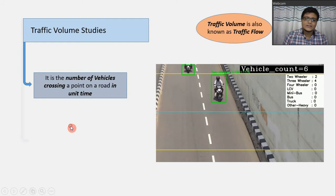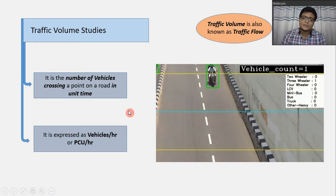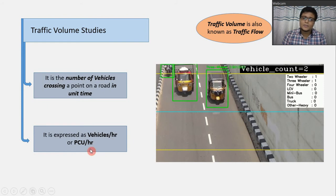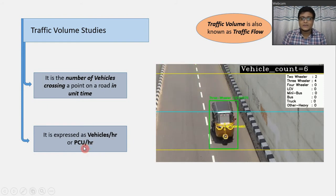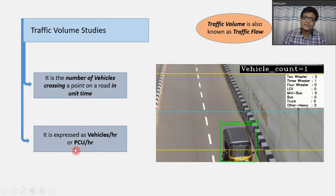The unit of traffic volume can be expressed as vehicles per hour or PCU per hour. PCU stands for passenger car unit, which we will cover in more detail later.